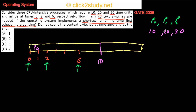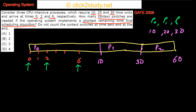After P0 completes at time 10, the next shortest is P1 with 20 units, so P1 runs from 10 to 30. Then P2 runs from 30 to 60. Now counting context switches: we don't count the switch at time 0 when P0 started, and not at the end when P2 finishes. That leaves one context switch at time 10 and one at time 30 — so the answer is two context switches.